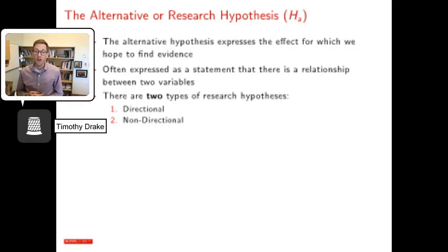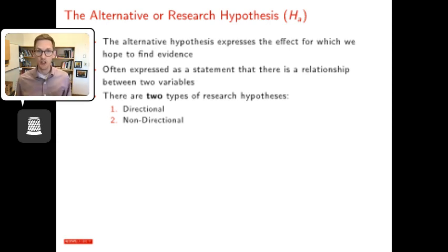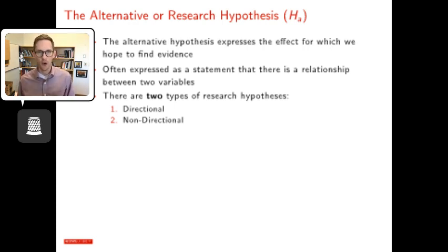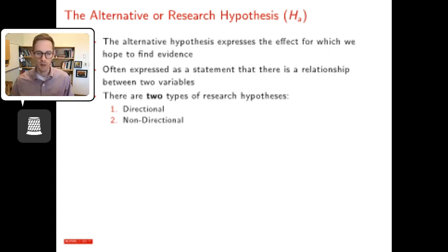The alternative hypothesis expresses the effect or relationship for which we hope to find evidence. It's often stated as: there is a relationship between two variables, a difference between two groups, or an effect of an intervention. There are two types: directional alternative hypotheses and non-directional alternative hypotheses.